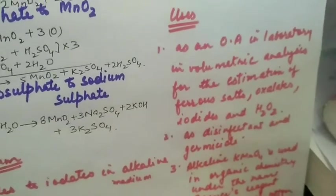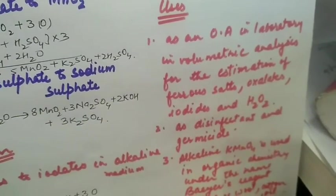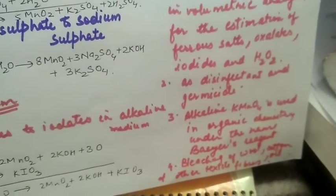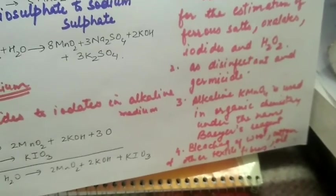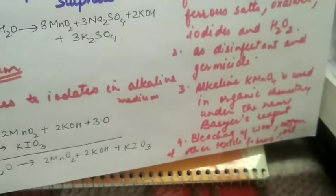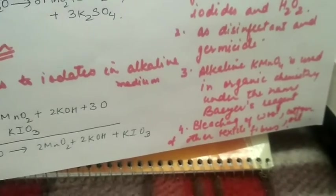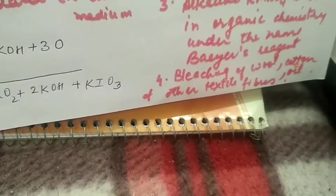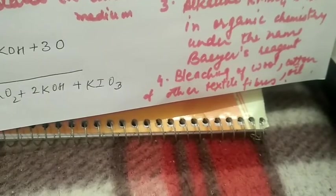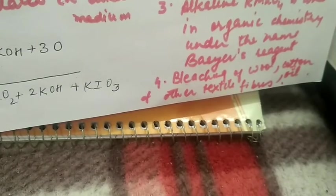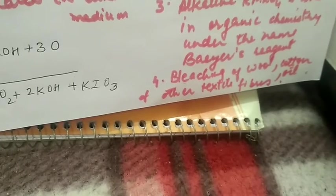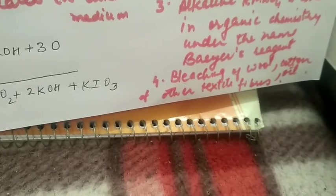Uses: It is used as an oxidizing agent in laboratories. In volumetric analysis, we can estimate ferrous ions, oxalates, iodides, and hydrogen peroxide. It is also used as a disinfectant and germicide. Alkaline KMnO4 is used in organic chemistry under the name Bayer's reagent. It's used for bleaching of wool, cotton, and other textile fibers.